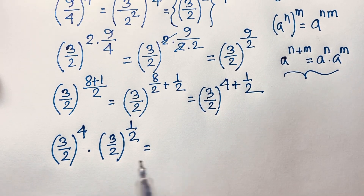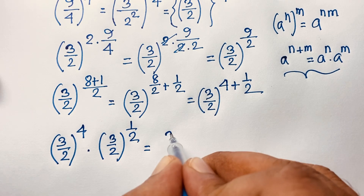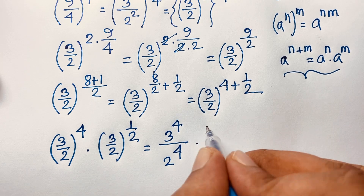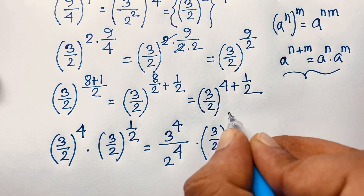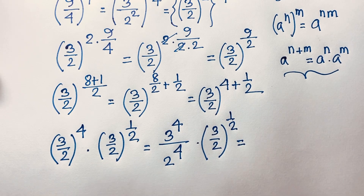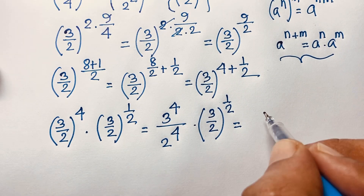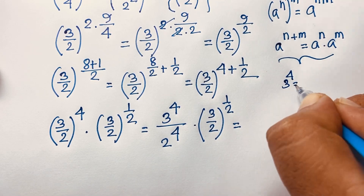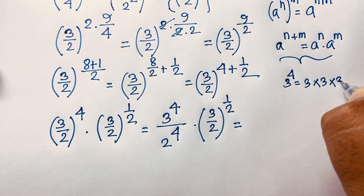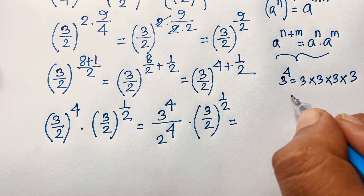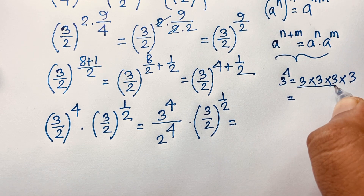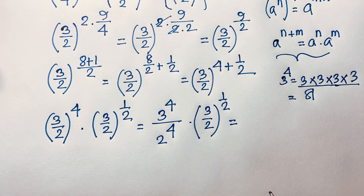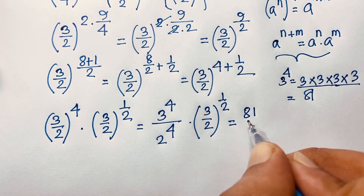Separating the exponent, we have (3/2)^4 times (3/2)^(1/2). Now 3 to the power 4 equals 3 times 3 times 3 times 3: 3 times 3 is 9, times 3 is 27, times 3 is 81. So 3^4 equals 81, giving us 81 over 2^4, which is 16.